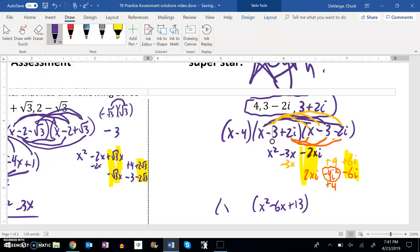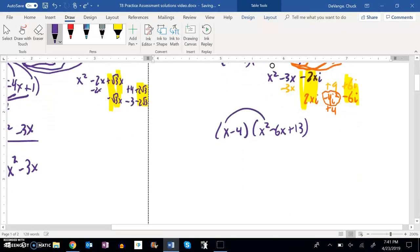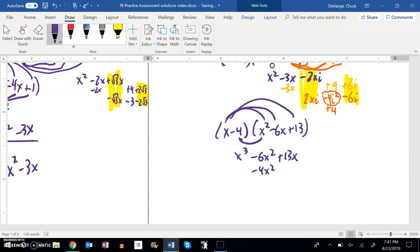And then I have that multiplied by x minus 4. And let me start to distribute this out. x times x squared is x cubed. Negative 6x squared plus 13x. Distribute this negative 4. Negative 4x squared. Negative times a negative is positive. Positive 24x. And then negative 4 times 13 is negative 52.